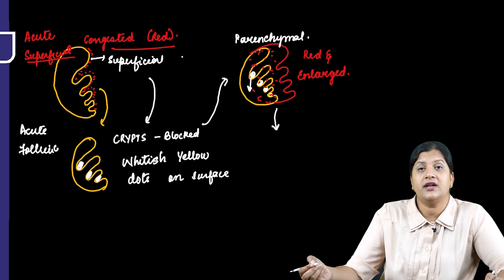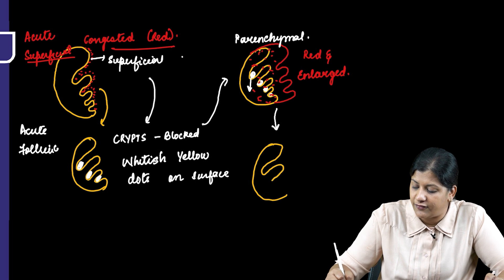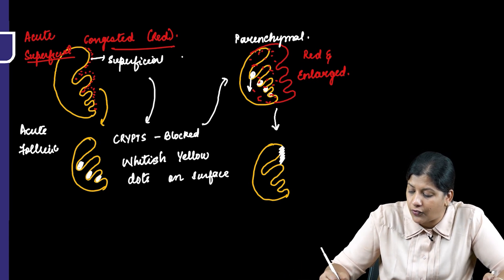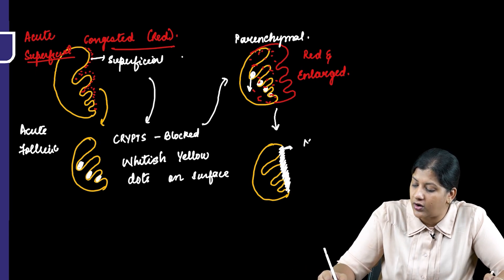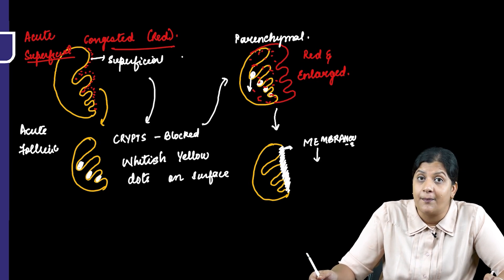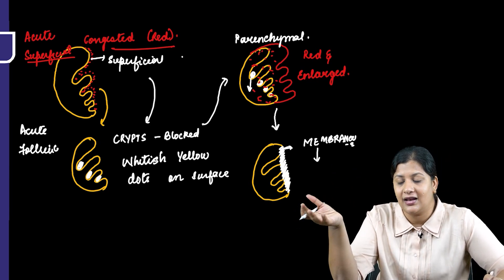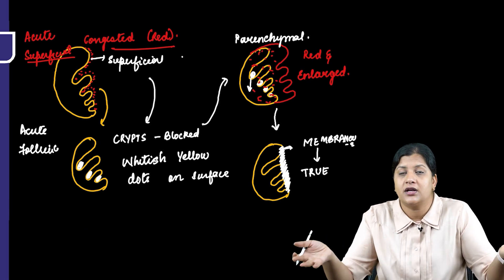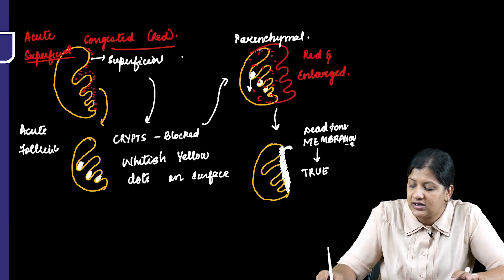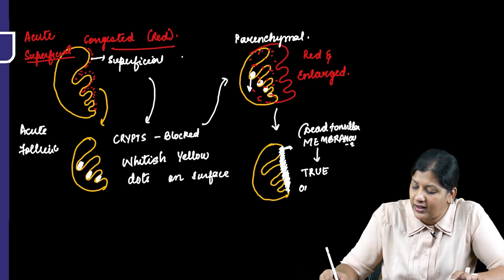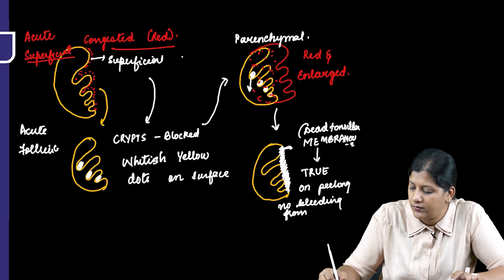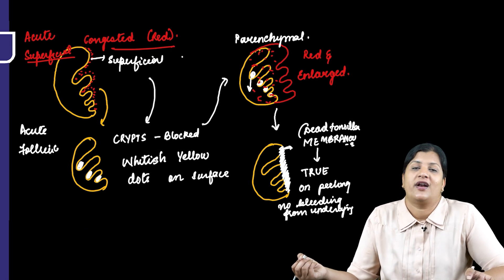In the final stage, the tonsil fights the infection, and the dead debris, bacteria, and dead tonsillar tissue coalesce to form a membrane over the tonsil — called membranous tonsillitis. This is a true membrane coming from the dead tonsillar tissue, so it is avascular. On peeling, there is no bleeding from the underlying surface.